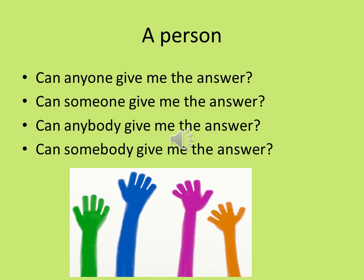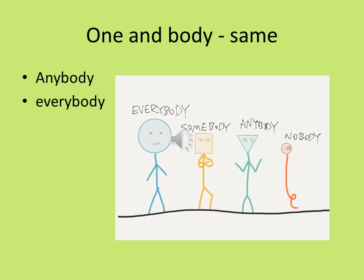Anybody, somebody, anyone, or someone are used to talk about a person. The words ending in -body or -one are the same in meaning. For example, in a class: Can anyone give me the answer? Can someone give me the answer? Can anybody give me the answer? Can somebody give me the answer? One and body are the same.